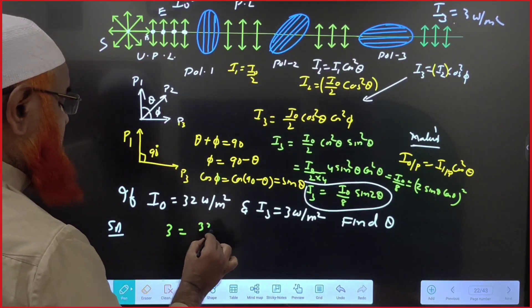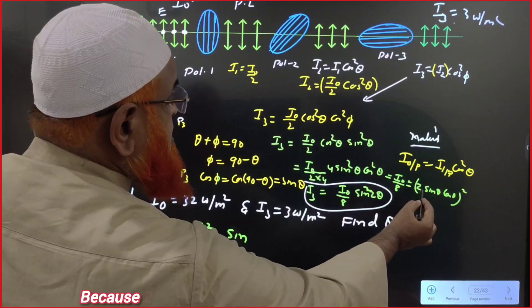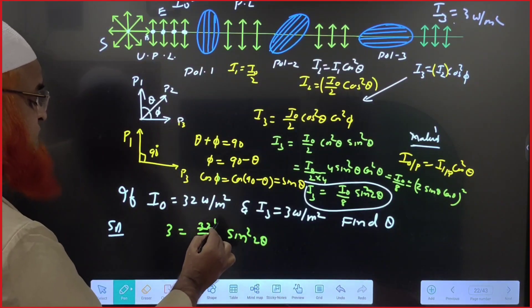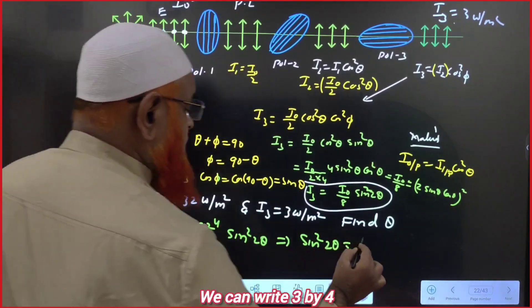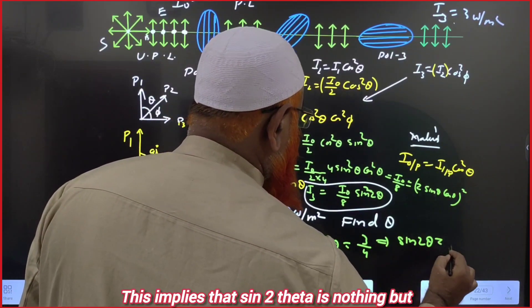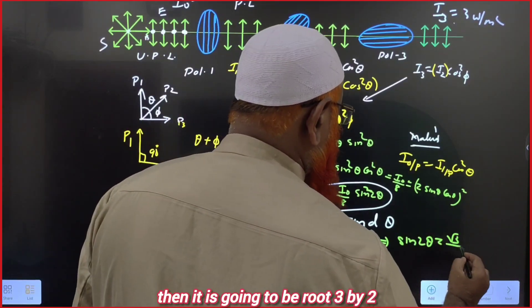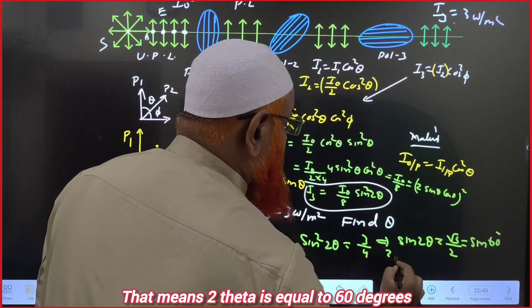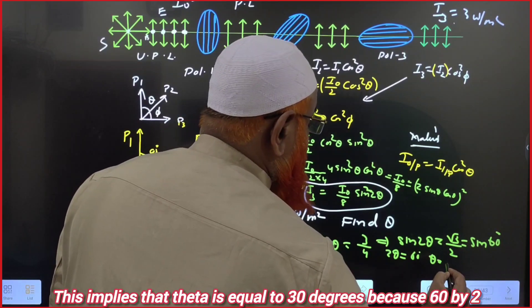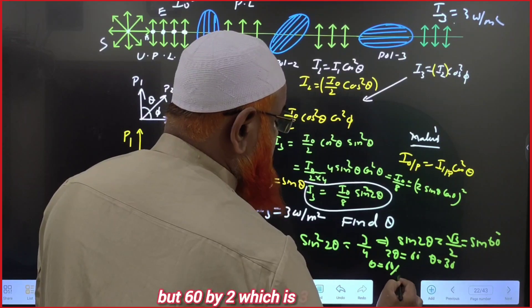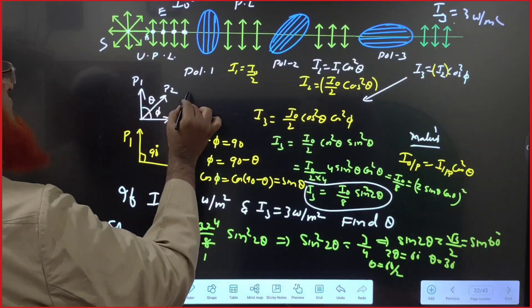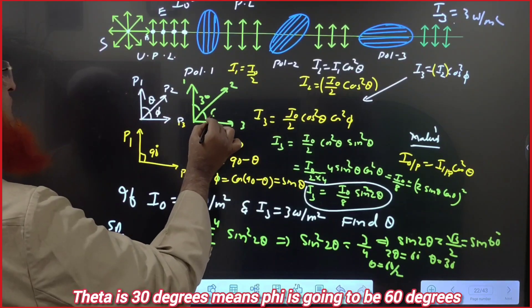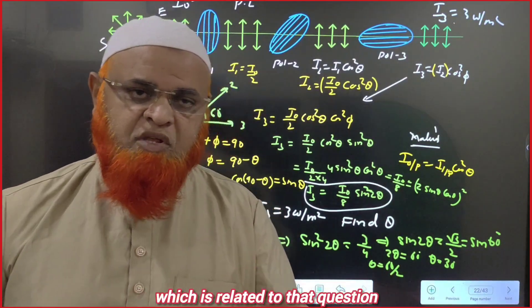Substituting the values: 3 = (32/8)·sin²(2θ) = 4·sin²(2θ). So sin²(2θ) = 3/4, which gives sin(2θ) = √3/2. This means 2θ = 60°, therefore θ = 30°. So the angle between polarizer 1 and polarizer 2 is 30 degrees, and consequently phi (angle between polarizer 2 and polarizer 3) is 60 degrees. That's how we solved the problem. Thank you very much.